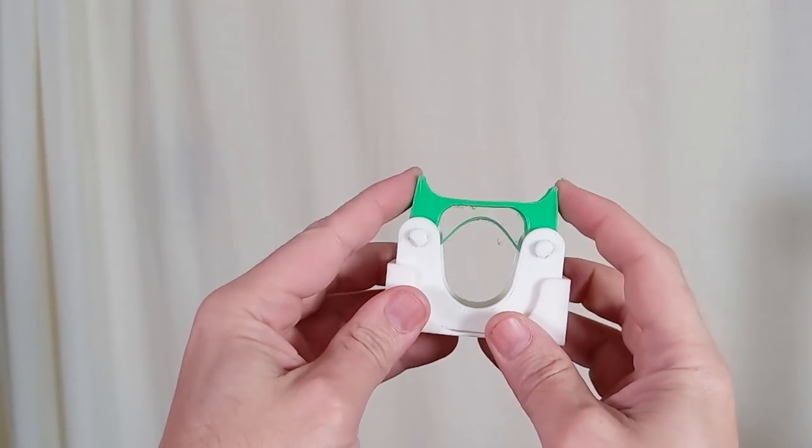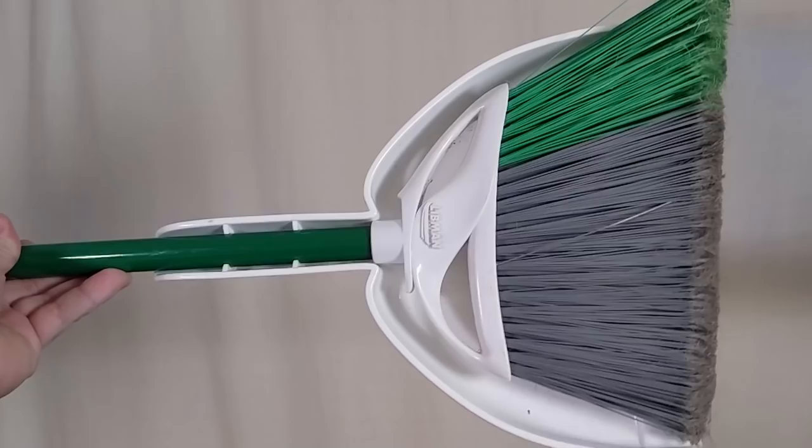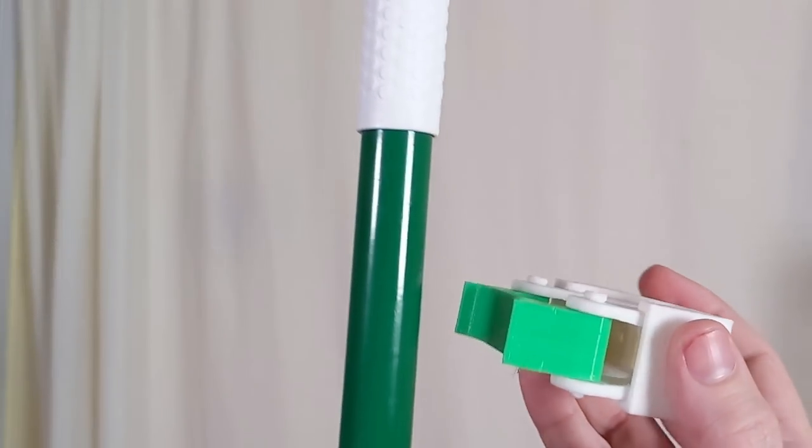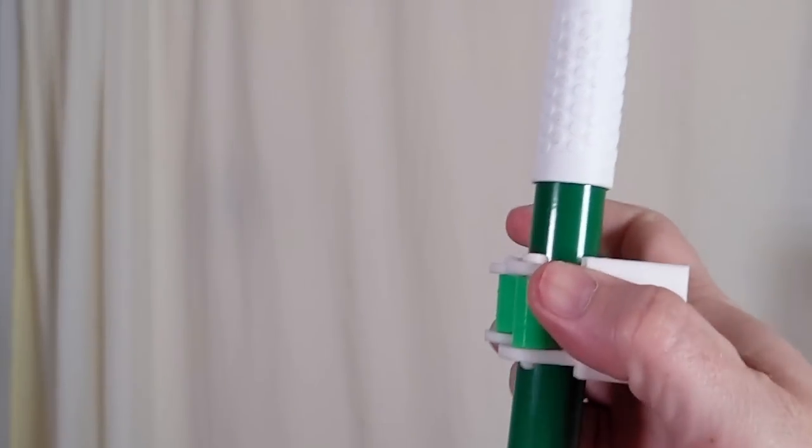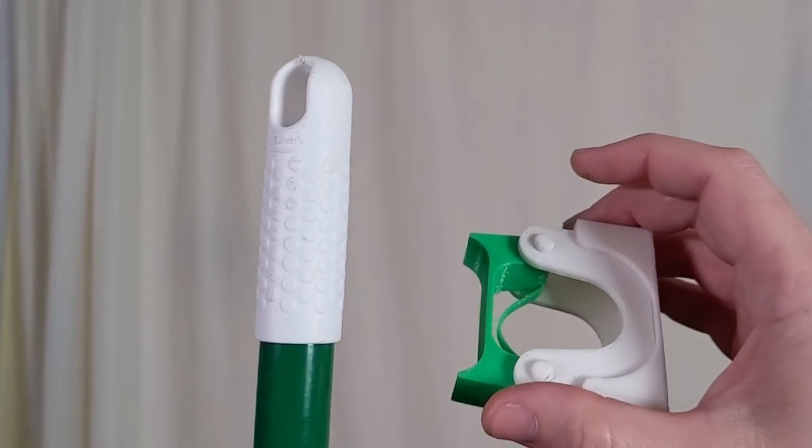I designed and 3D printed this compliant mechanism. Its purpose is to hold a broom. This part here mounts to the wall and the broom handle gets pushed into it like so. Pull it off and it's ready to go again.